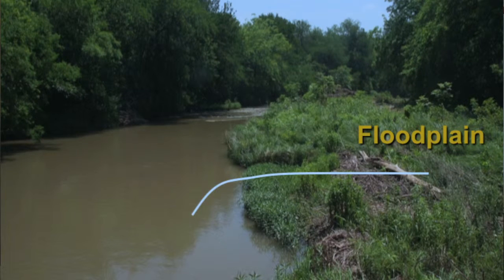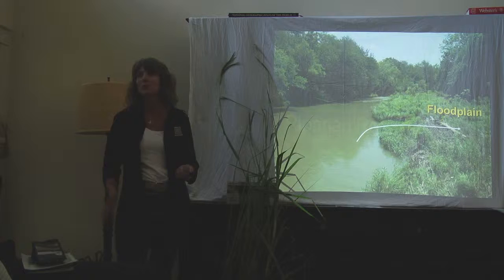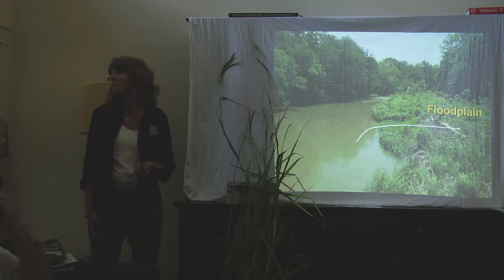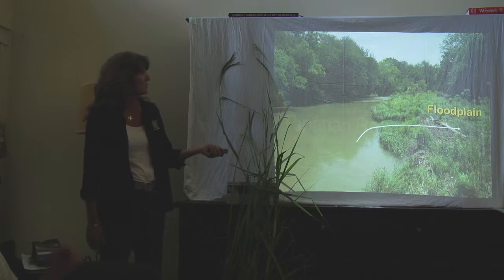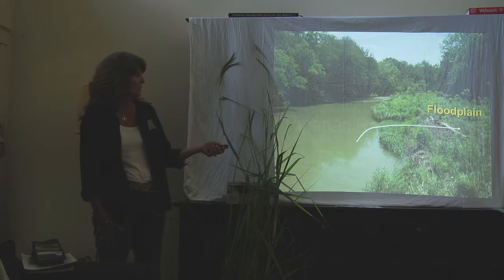It helps sediment get trapped, and when that sediment gets trapped we can grow more vegetation. Slowly over time, that's what you'll hear us calling the riparian sponge. What happens is we get a lot of water stored out here in the floodplain, and then that gives water back to the creek over time in the form of increased base flow. So when you hear us talking about the riparian sponge, that's kind of what we're talking about.